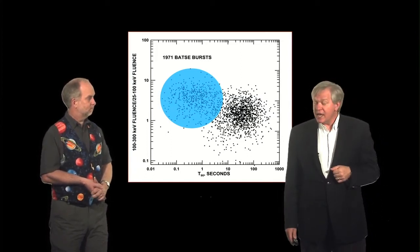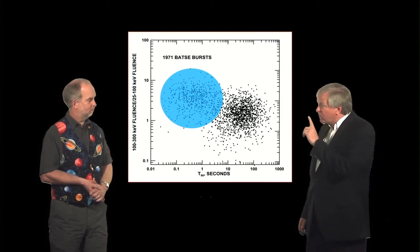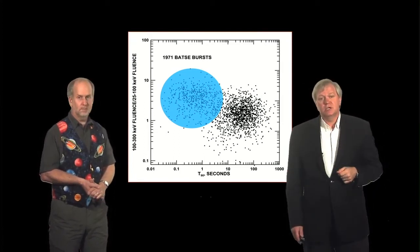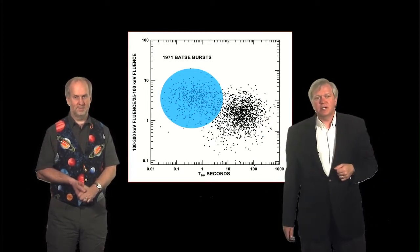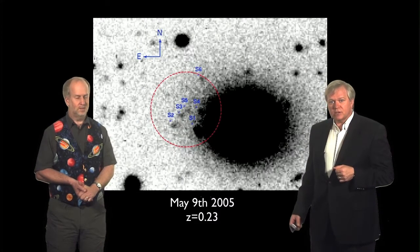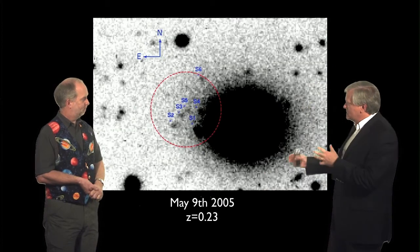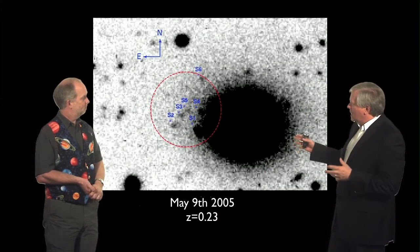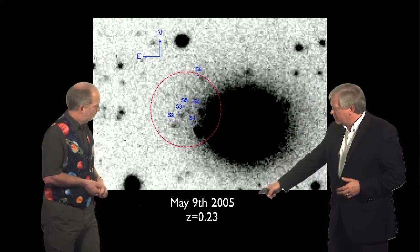So we didn't have to wait too long. In May of 2005, SWIFT detected its first short, hard burst. And so we all slewed our telescopes, and here's an image taken with the Keck telescope. The Keck telescope is the largest telescope on planet Earth. And this image showed a big elliptical galaxy at a redshift of 0.23.